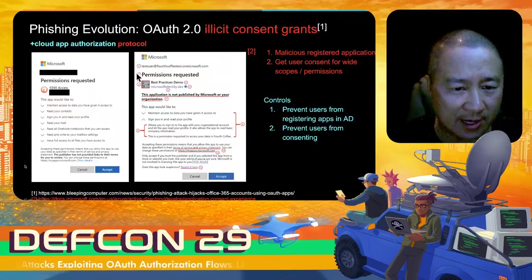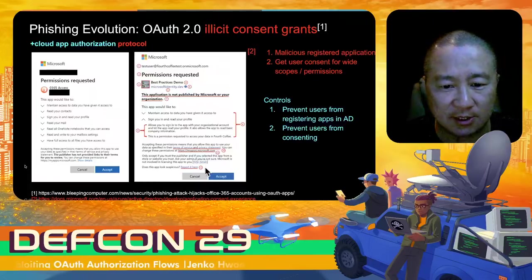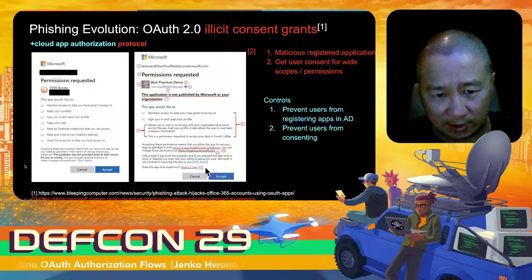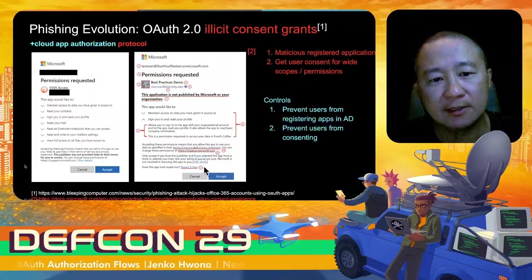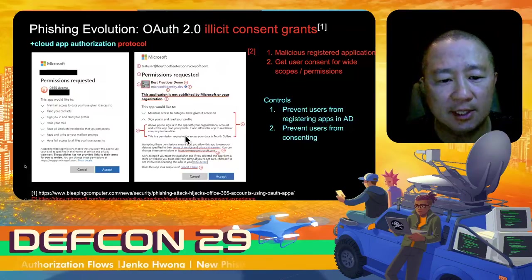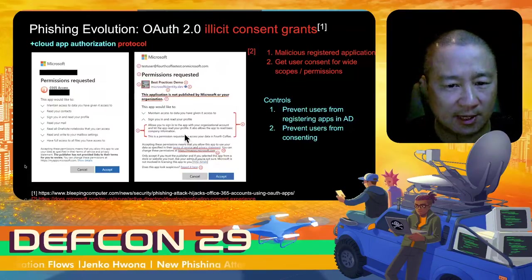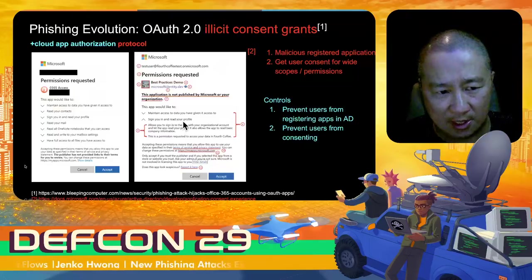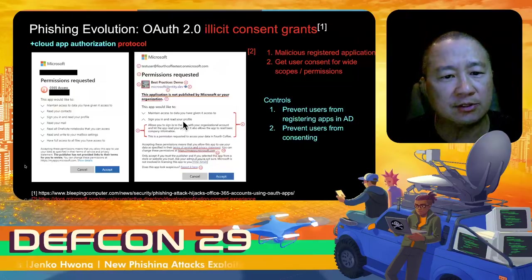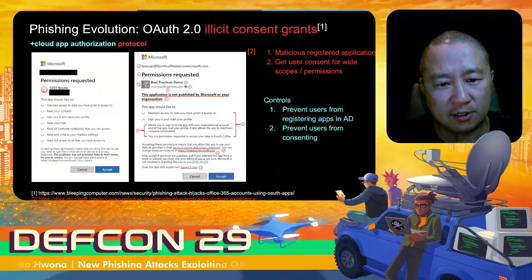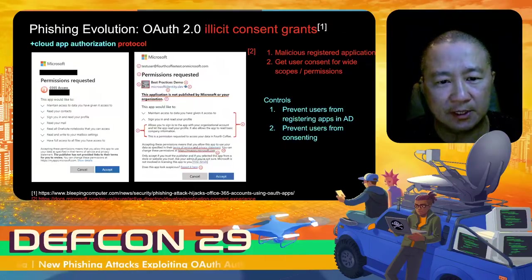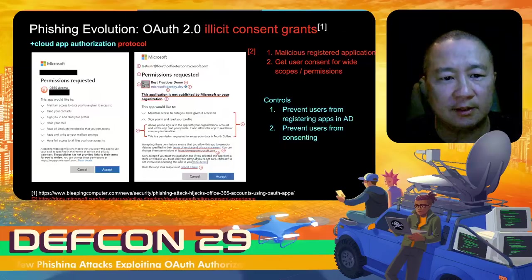I want to point out that the Microsoft documentation has a nice 12-point numbered system explaining this — I didn't add that, that's actually part of their documentation. As a researcher, it's great. But as a user, it's extremely confusing to have 12 points to explain an okay dialogue. This is where complexity is the enemy of security.